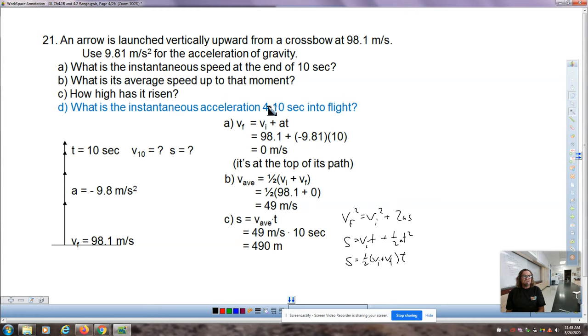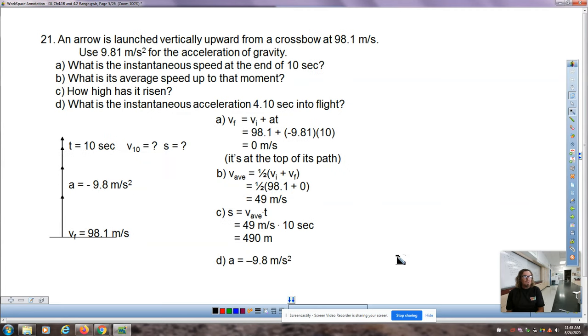What is the instantaneous acceleration 4.1 seconds into the flight? We can say the acceleration is 9.8 the entire time. Can we be specific that in the first 10 seconds it's negative 9.8, and in the second 10 seconds from 10 to 20 it's positive 9.8? That would be acceptable, but definitely that 9.8 is a constant.